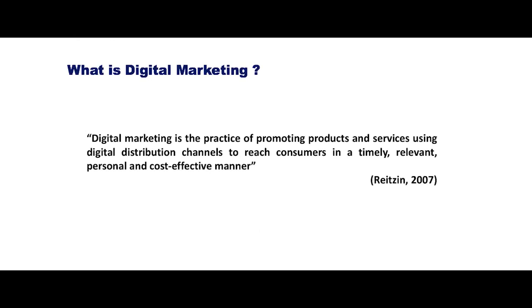Let me give you the formal definition of digital marketing. Digital marketing is the practice of promoting products and services using digital distribution channels to reach consumers in a timely, relevant, personal, and cost-effective manner. In simple words, digital marketing is the process of marketing products and services using the Internet and any digital device. For example, if I want to advertise my product using various websites or search engines, this will be called digital marketing.